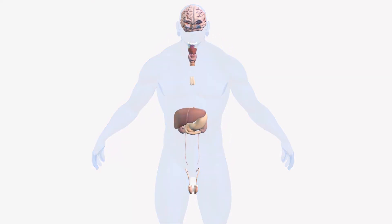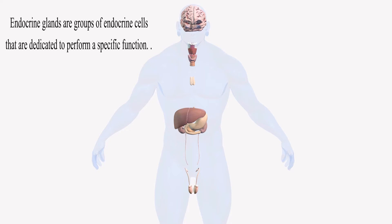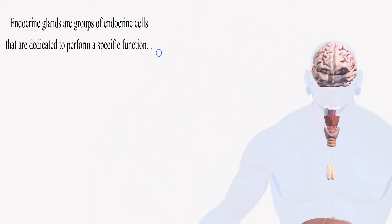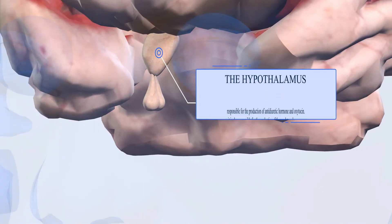We should know that we have many hormones in the body that perform different functions or have different responses. Another terminology to learn is also what's called endocrine glands. Endocrine glands are essentially groups of endocrine cells that are dedicated to perform a specific function. So let's look at the first two or three most important endocrine glands.